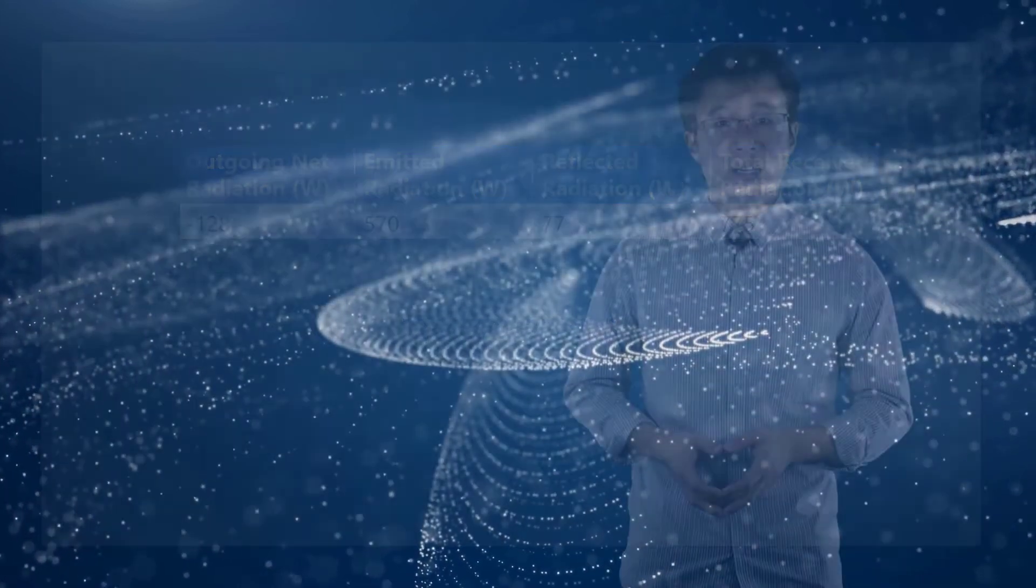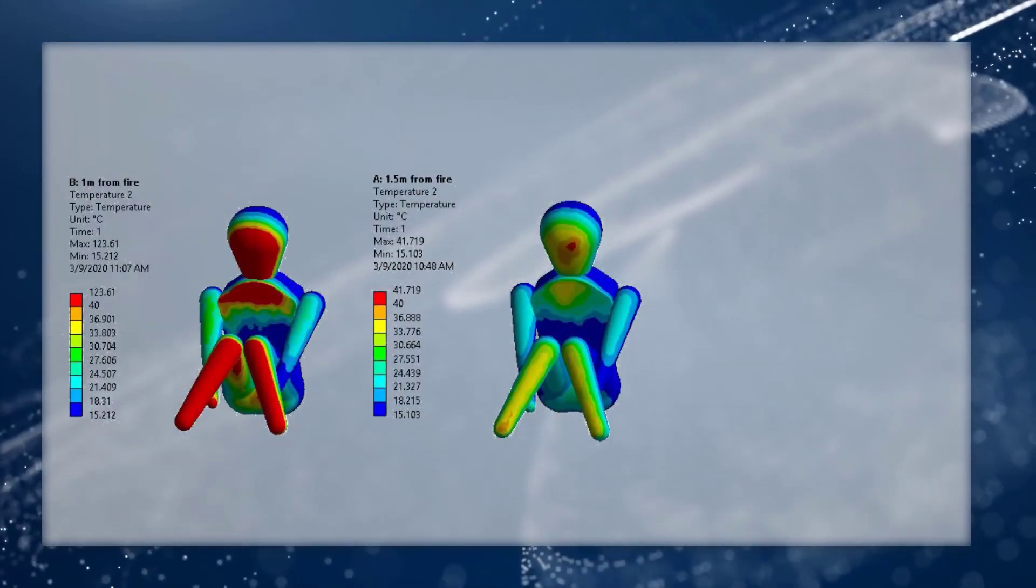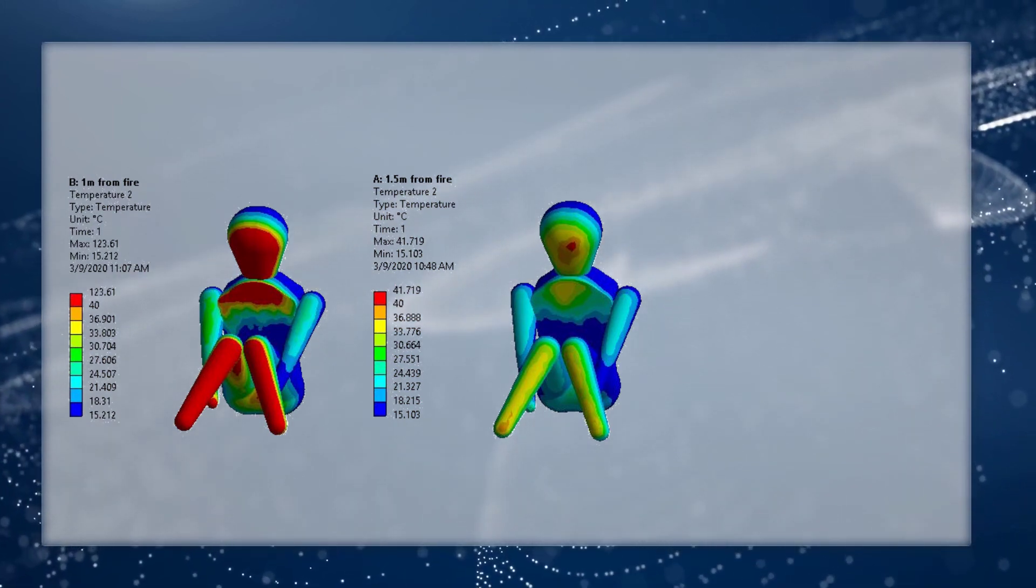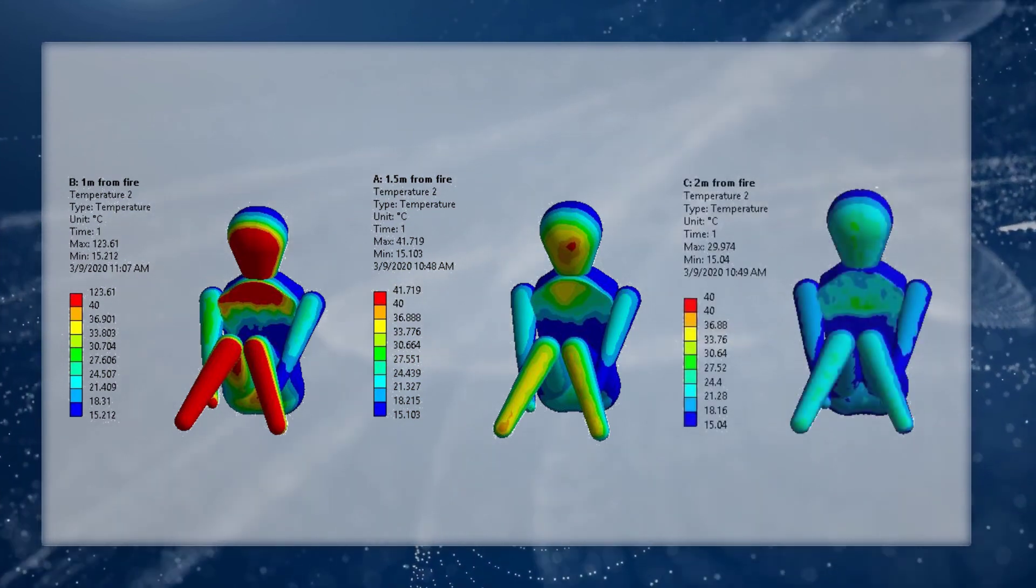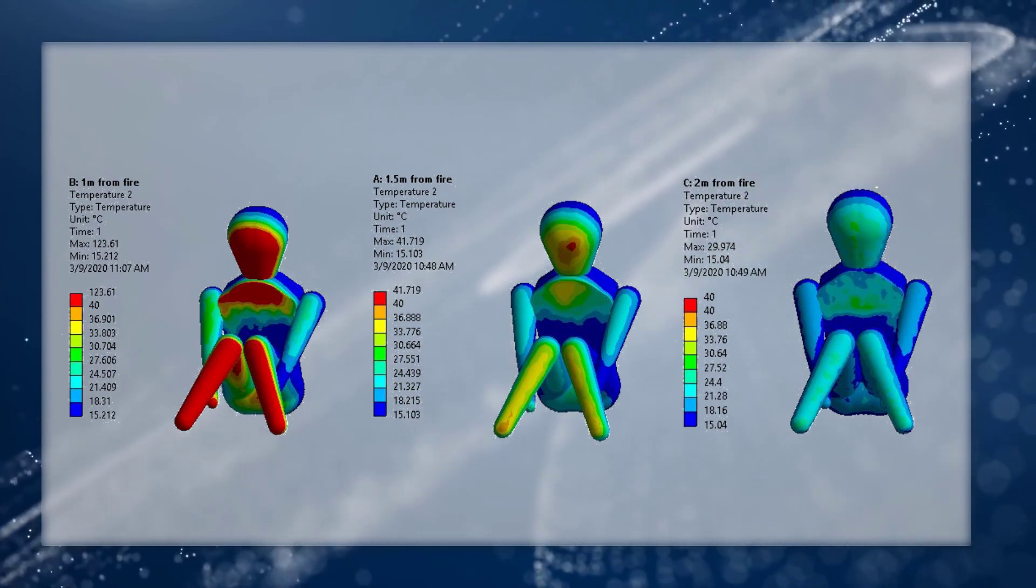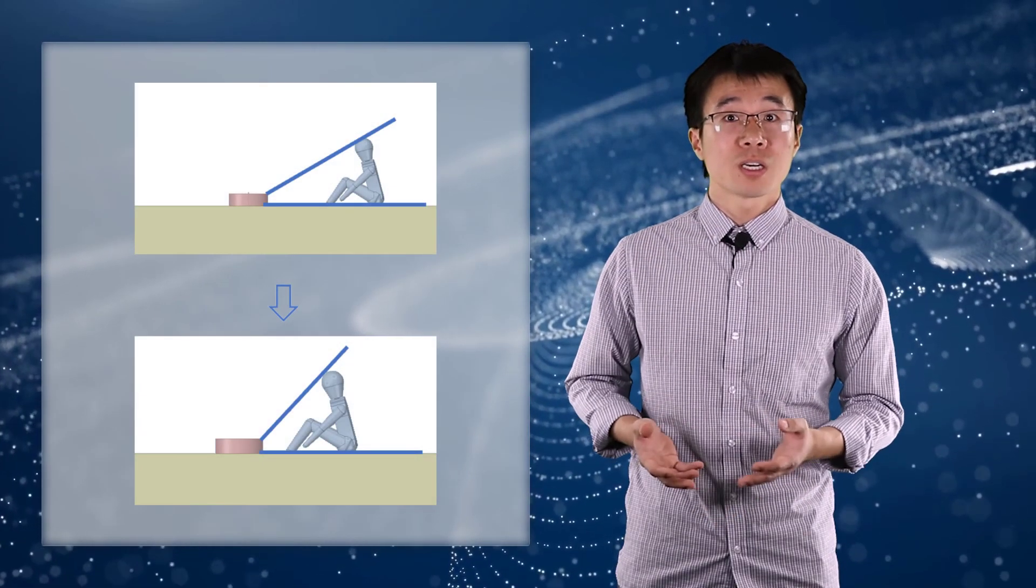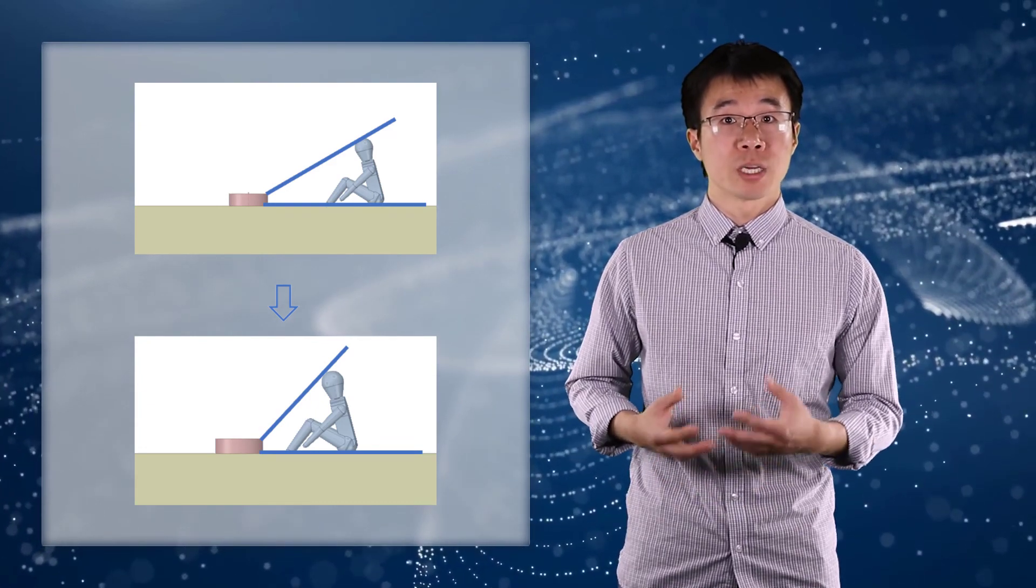Now, let's do an experiment. Let's move the person half a meter closer to the campfire and run the simulation again. Now, the highest temperature increases to 123 degrees Celsius. We can run another simulation and move the person half a meter away from the campfire compared to the original simulation and plot the temperature distribution on the person again. And this time, the highest temperature drops to 30 degrees Celsius. The changes in the result are due to the change in the view factors. The closer a person sits to the fire, the larger the overall view factor is and the more radiation he receives.